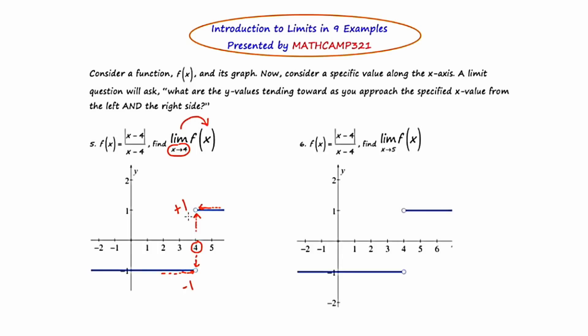For a limit to exist, these two numbers have to be the same. You can't be approaching negative one and one at the same time. So we're actually going to write DNE, which stands for does not exist.